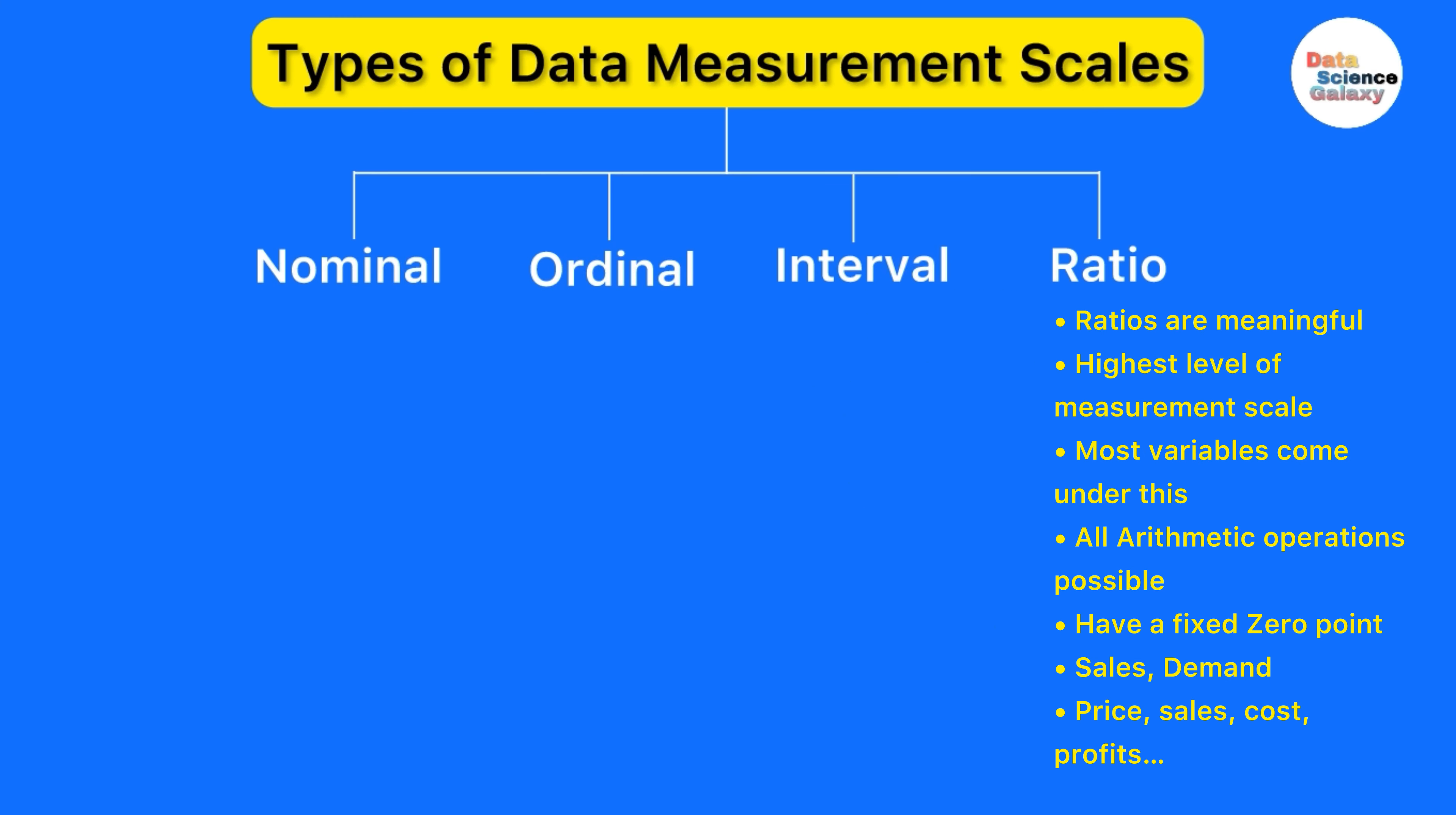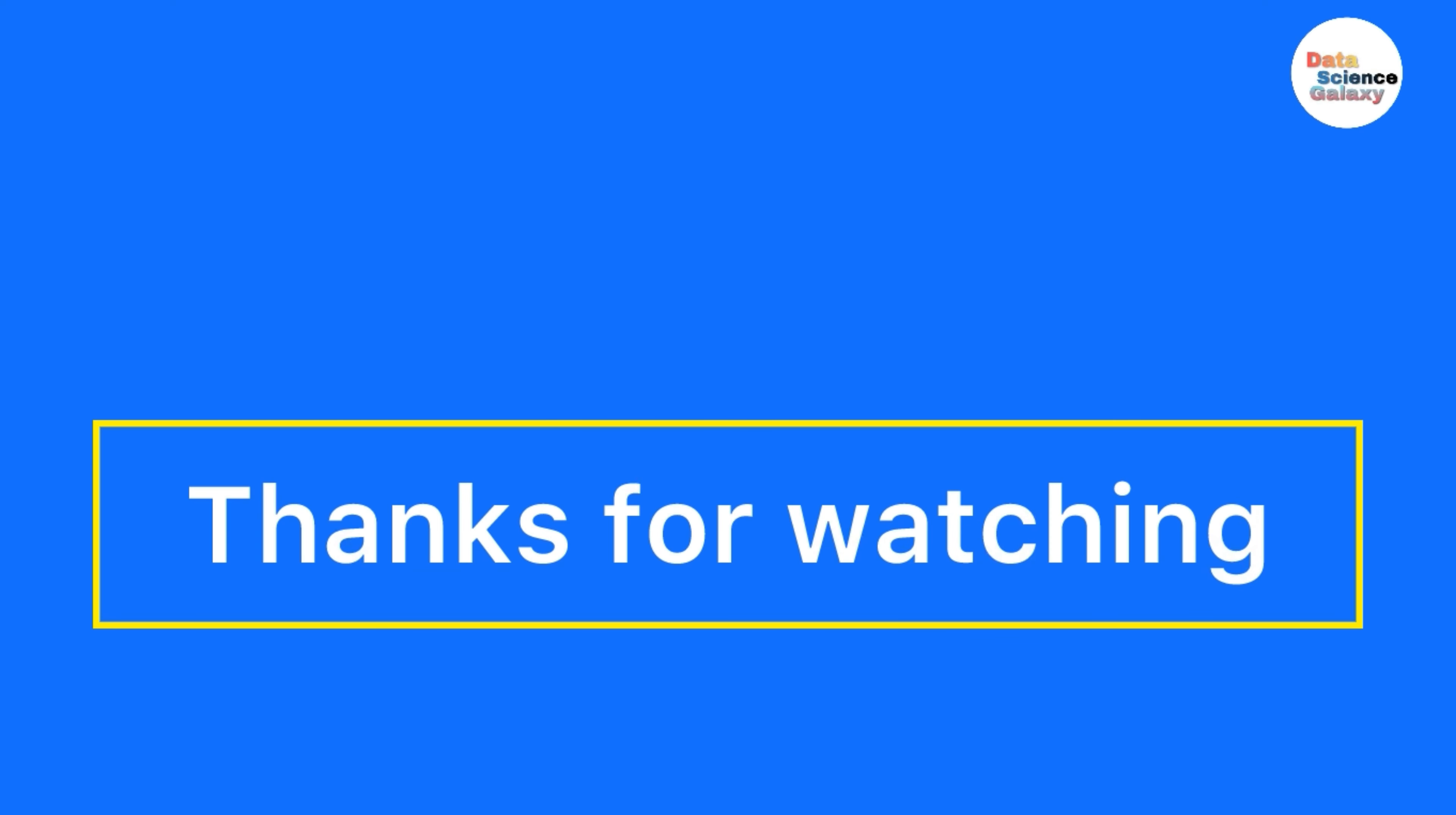Let's go on to the ratio scale. It is the highest level of a measurement scale where ratios are meaningful. That is an important point to note. Most variables come under this ratio scale. All arithmetic operations are possible and it will have a fixed zero point. Some of the examples are sales, demand, price, etc.